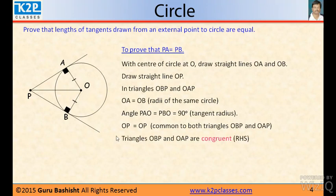Triangle OBP and OAP are congruent. And therefore, PA equal to PB proved. Length of both the tangents from an external point to a circle are same.